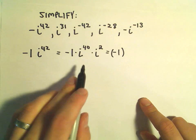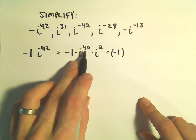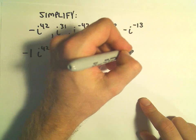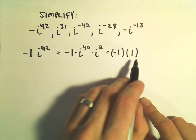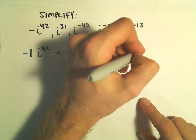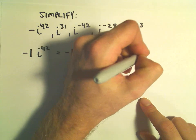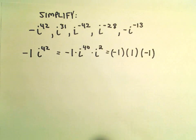We've got negative 1, notice i to the 40th. That's a multiple of 4, so based on what we said, that's just going to equal the number 1. We still have our i squared left over, but i squared is equal to the number negative 1.